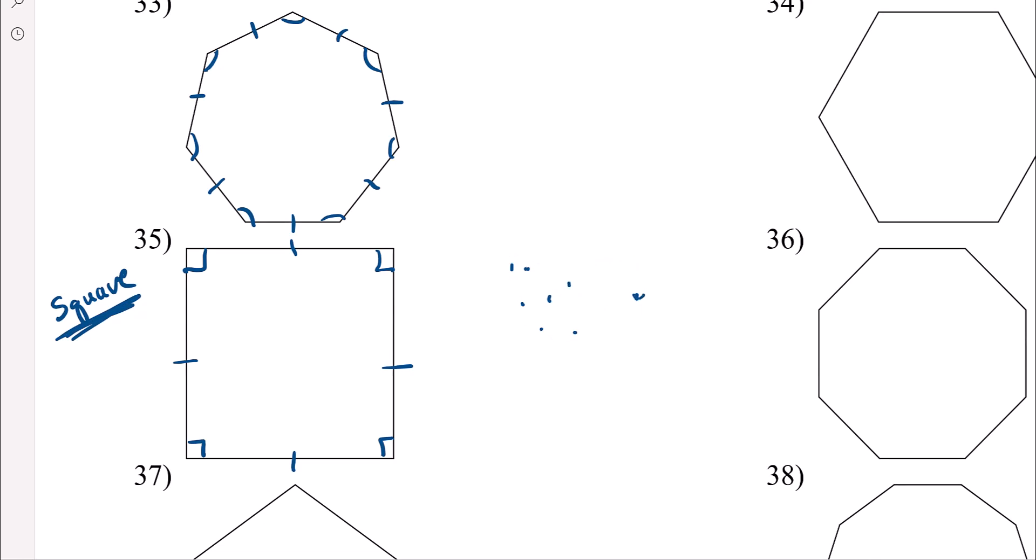For a three-sided, it's not just any triangle. Let's see if I can do this. It's an equilateral triangle. All three angles are 60 degrees, and all three sides have the same measure. So, for a three-sided, it's an equilateral triangle.